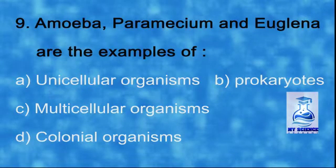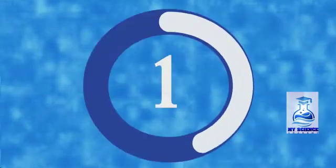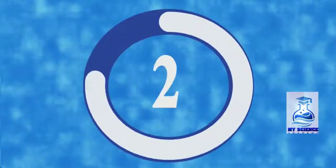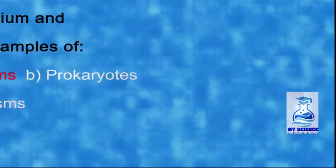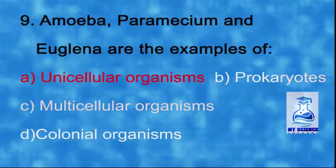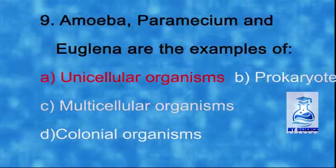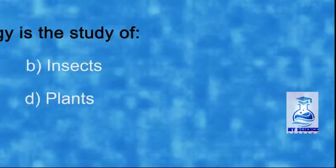Number nine: which organisms are — a) unicellular organisms, b) prokaryotes, c) multicellular organisms, d) colonial organisms. The correct option is a) unicellular organisms.